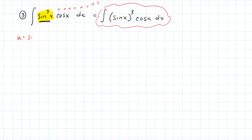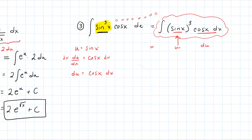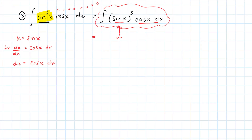Looking at this: sin(x) is inside a power, so that's a good candidate for u. My u = sin(x). Taking the derivative: du/dx = cos(x). Separating the differential by multiplying both sides by dx: du = cos(x) dx. That can be a direct substitution because I have u, and the entire cos(x) dx is directly du.